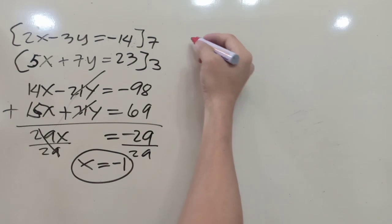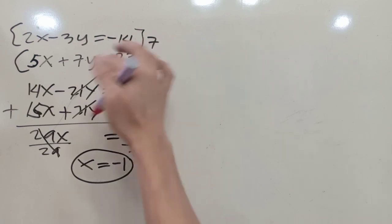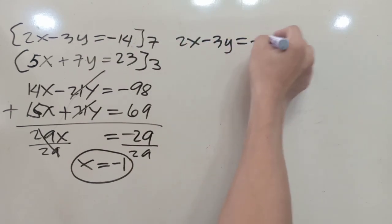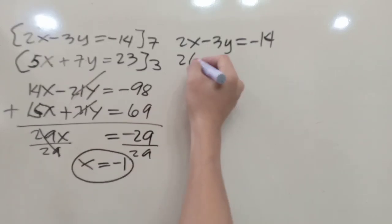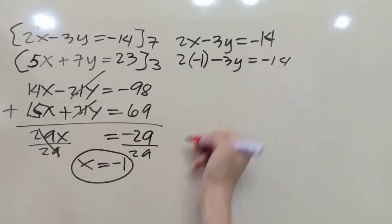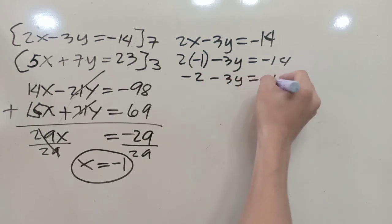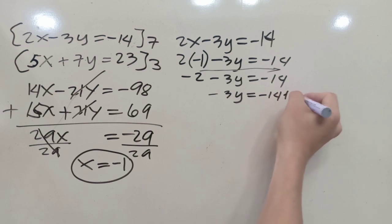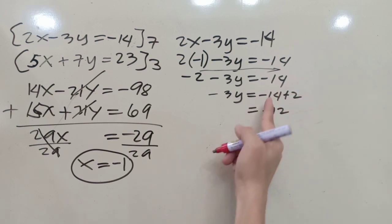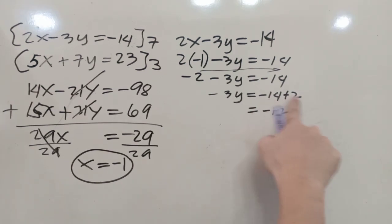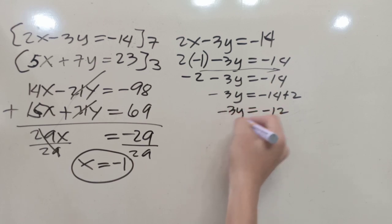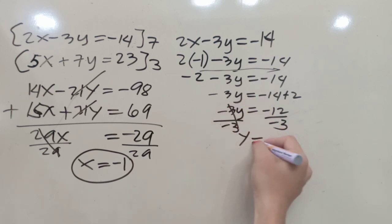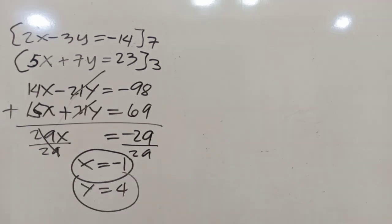Now solving for y, I'll use equation one since it's simpler: 2x minus 3y equals negative 14. Substituting x equals negative 1, we get 2 times negative 1 minus 3y equals negative 14, so negative 2 minus 3y equals negative 14. Transposing negative 2, we get negative 3y equals negative 14 plus 2, which is negative 12. Dividing by negative 3, y equals positive 4.